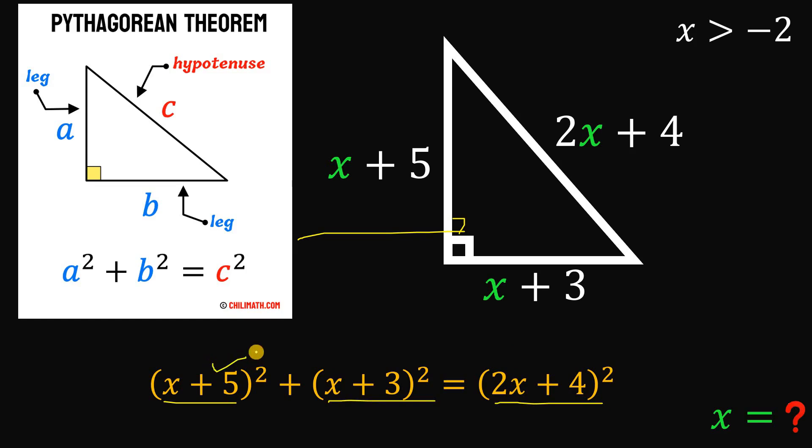Now, if we expand x plus 5 raised to the power of 2, we get x squared plus 10x plus 25. Also, if we expand x plus 3 raised to the power of 2, this will give us x squared plus 6x plus 9. And if we expand 2x plus 4, this will give us 4x squared plus 16x plus 16.